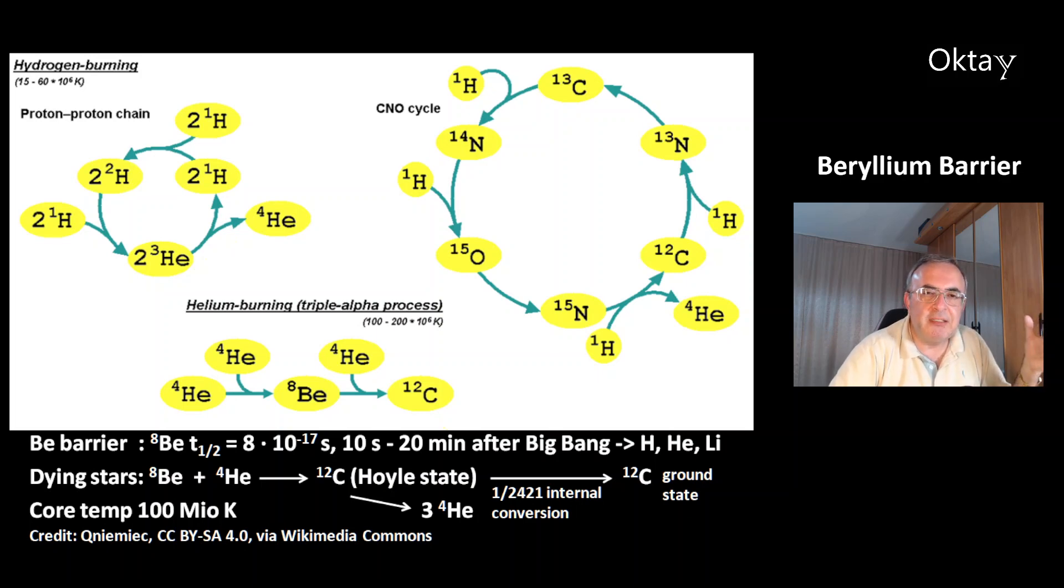After the big bang, the elements hydrogen, helium and lithium were formed. In the bottom, you can see the triple alpha process that makes beryllium and then carbon-12.